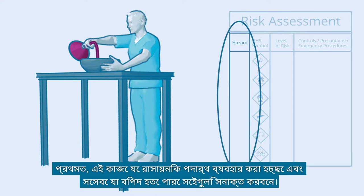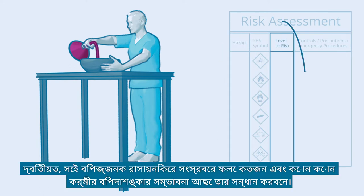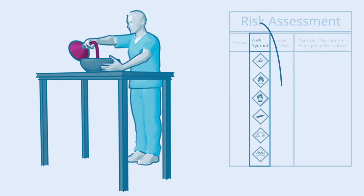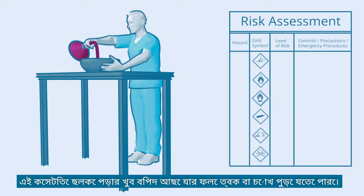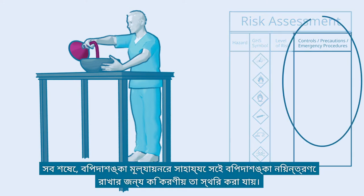First, identify the chemical substances used in this activity and their hazards. Second, locate which and how many workers are possibly at risk of exposure to that hazardous chemical. Next, identify the nature and level of risk of that activity. In this case, there is a high risk of splashing, which may cause skin or eye burns. Finally, the risk assessment helps to decide what actions to take for controlling the risk.